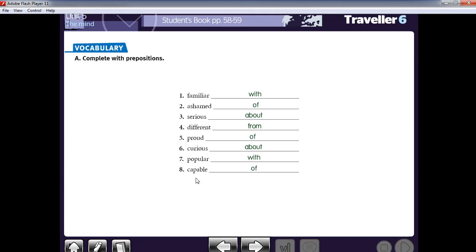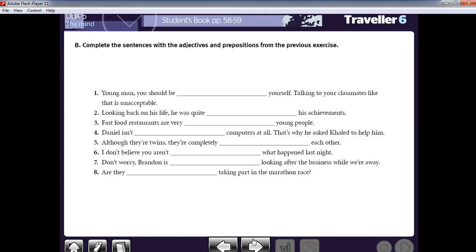Complete the sentences with the adjectives and prepositions from the previous exercise. Let's start with sentence number one. Hey young man, you should be ashamed of yourself. Talking to your classmates like this is unacceptable. So this young man made a mistake. He acted badly. So someone says you should be ashamed of yourself.